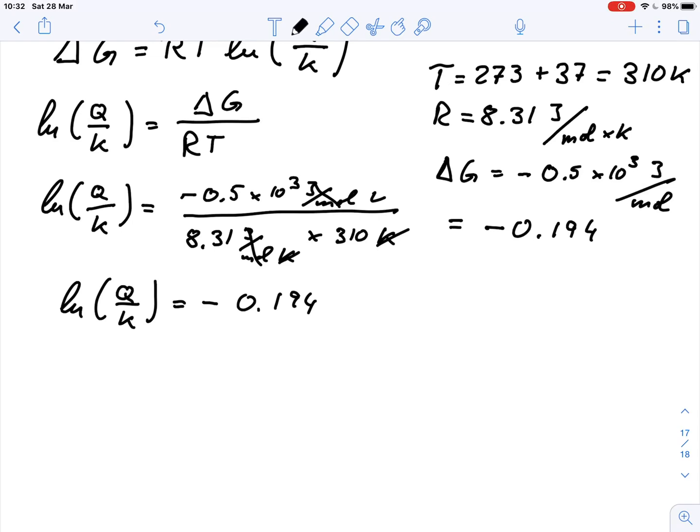And in order to get the displacement factor, we take both sides, e to the power of, then e and ln cancels out. And we get Q over K equals e to the power of negative 0.194. And that gives us a ratio of 0.824 rounded.